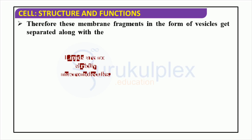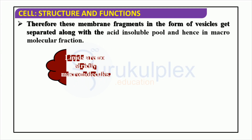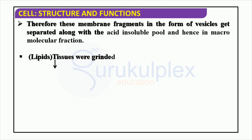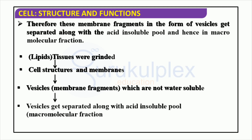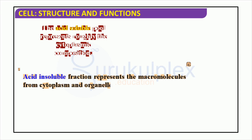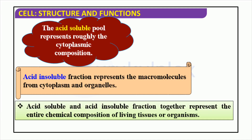Lipids are the primary components of the acid-insoluble pool. Although not strictly macromolecules, these molecules are essential for cell structure as they are present in cell membranes and vesicles. Vesicles are membrane fragments that are not water-soluble and can be found in the acid-insoluble pool and macromolecular fraction when tissues are ground. The two chemical components of living tissues or organisms are acid-soluble and acid-insoluble fractions. The acid-soluble fraction is approximately the same as the cytoplasmic composition, while the acid-insoluble fraction encompasses macromolecules from cytoplasm and organelles. These two fractions together constitute the entire chemical composition of living tissues or organisms.